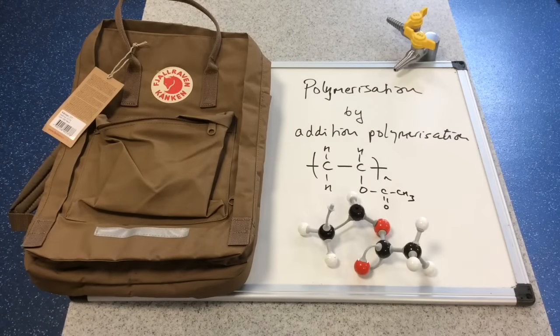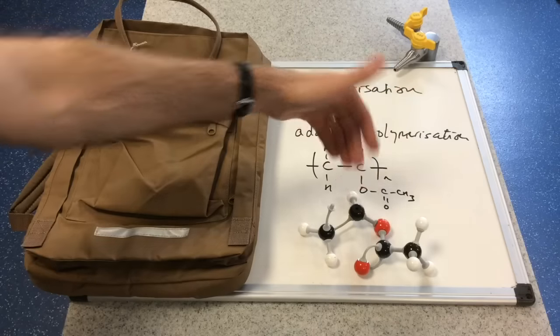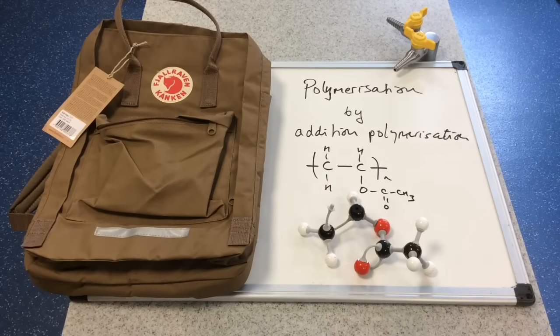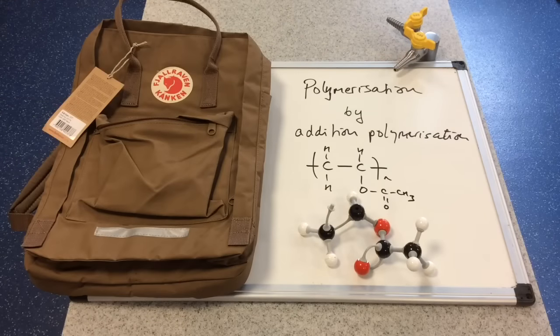So now they've made polyvinyl acetate. So there's the molecular model of polyvinyl acetate, the repeat unit. And there's the displayed formula for that.